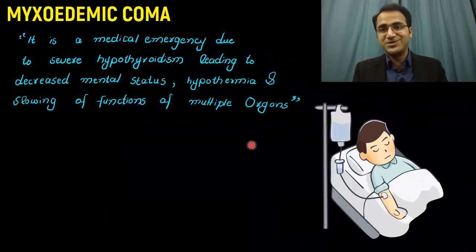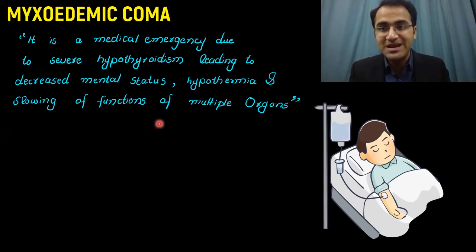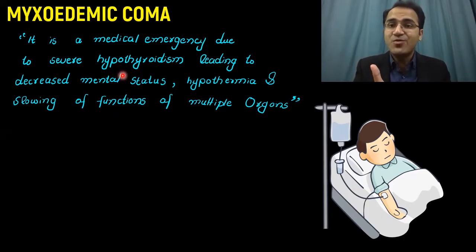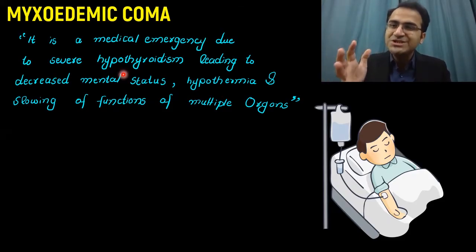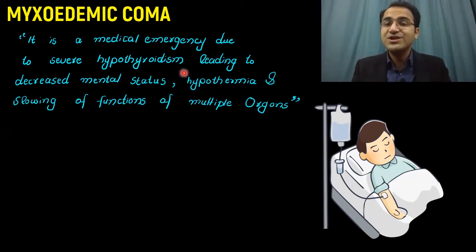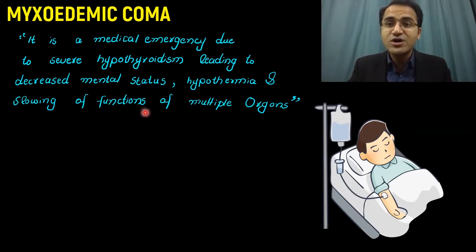What is myxedema coma? Myxedema coma is basically a medical emergency due to severe hypothyroidism, leading to decreased mental status, hypothermia, and slowing of the functions of multiple organs. Since in hypothyroidism there is a lack of thyroid hormones, and thyroid hormones run the metabolic machinery of the body, if there is a lack of thyroid hormones, the metabolic machinery of the body will be slowed down.